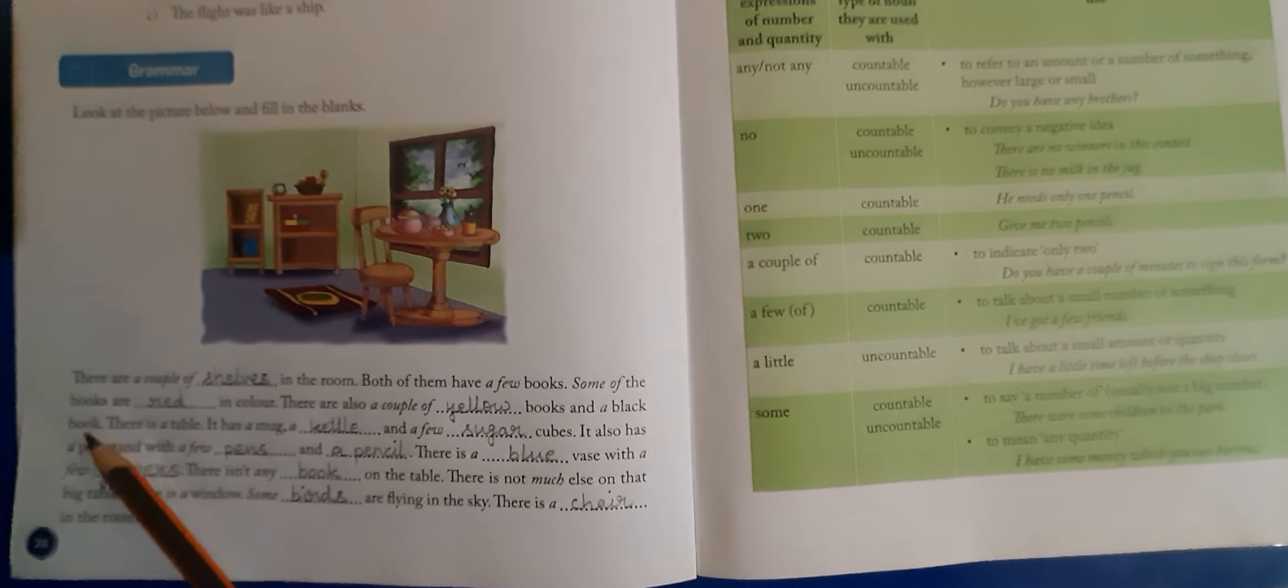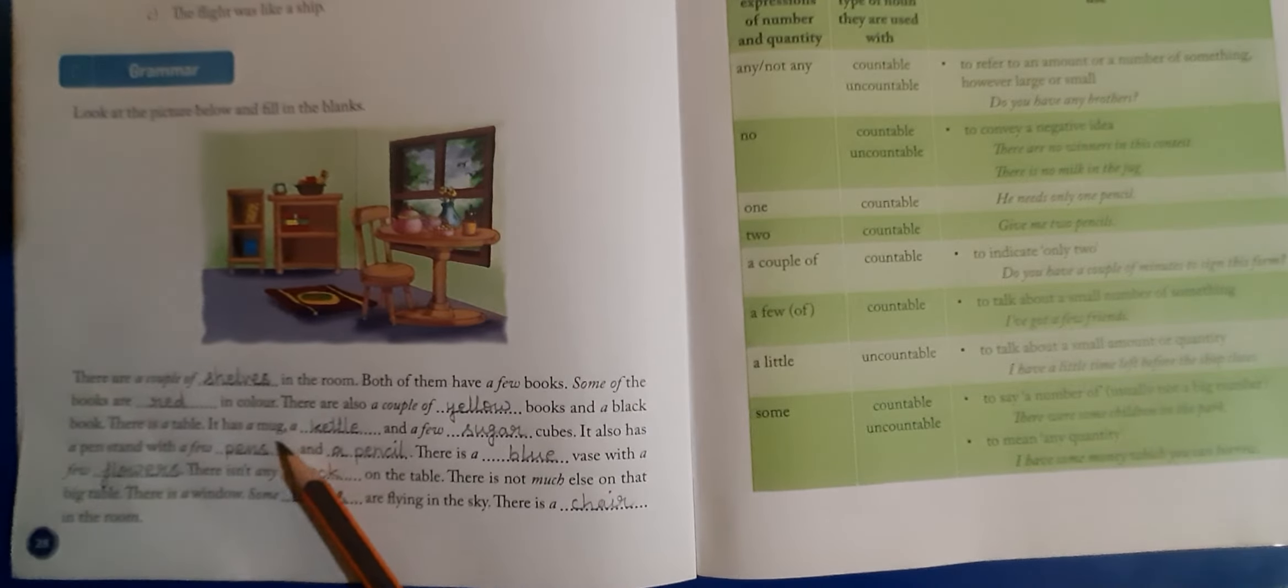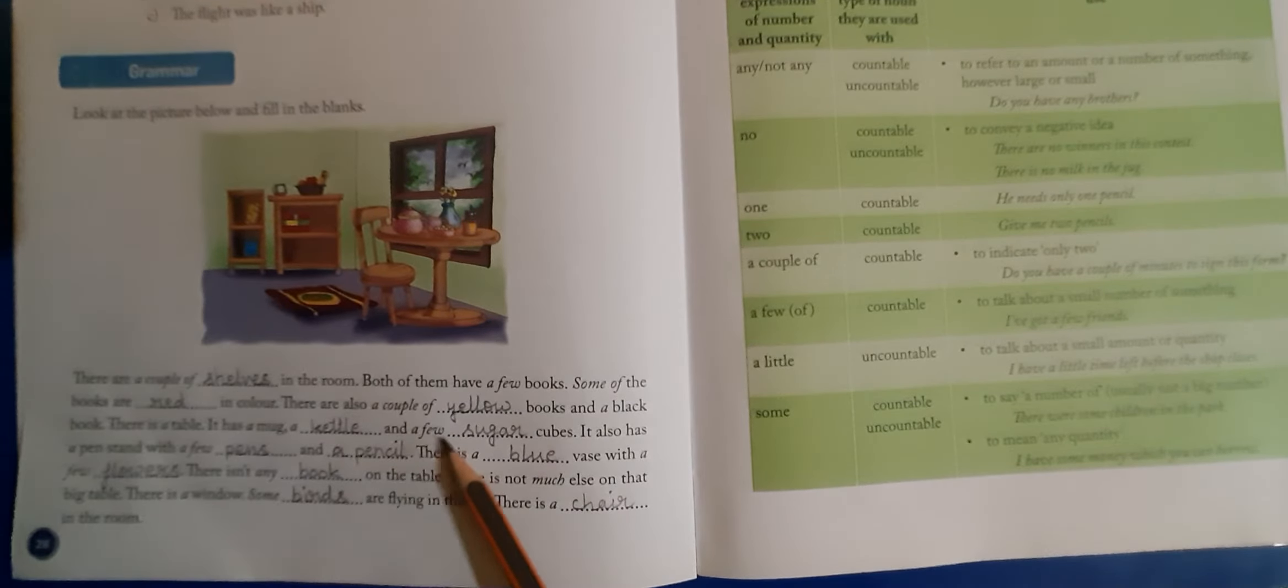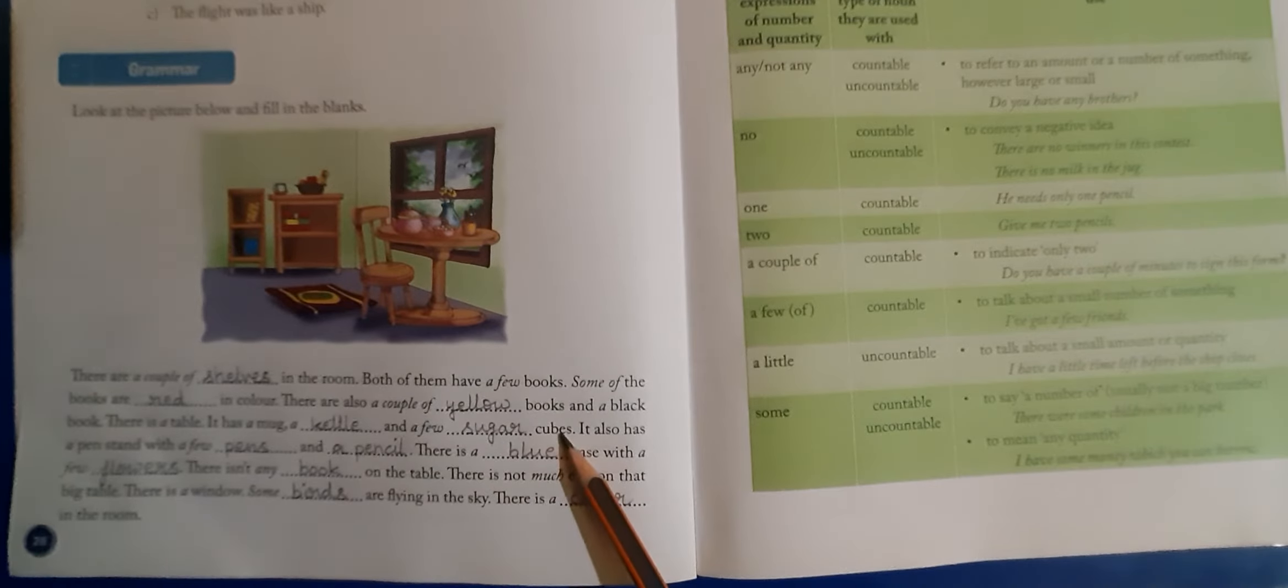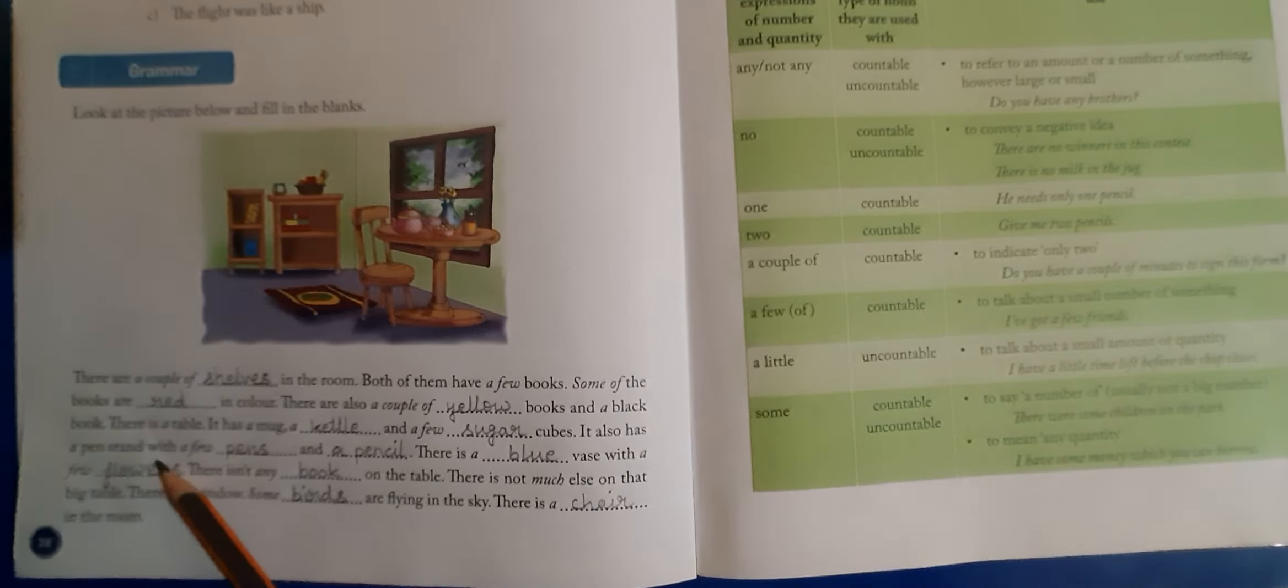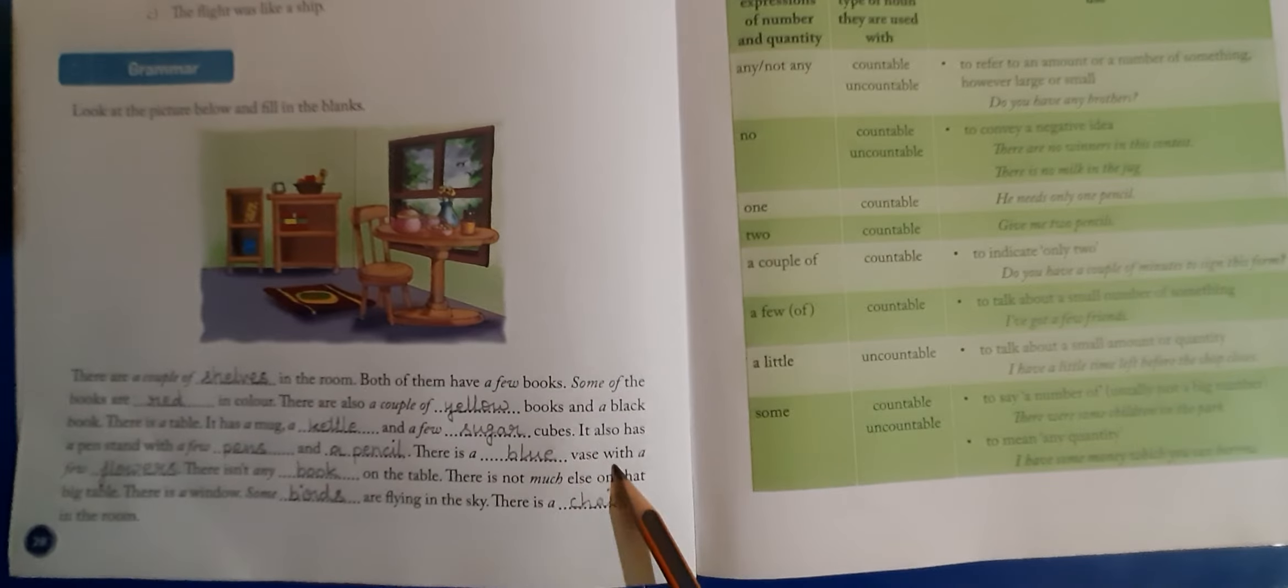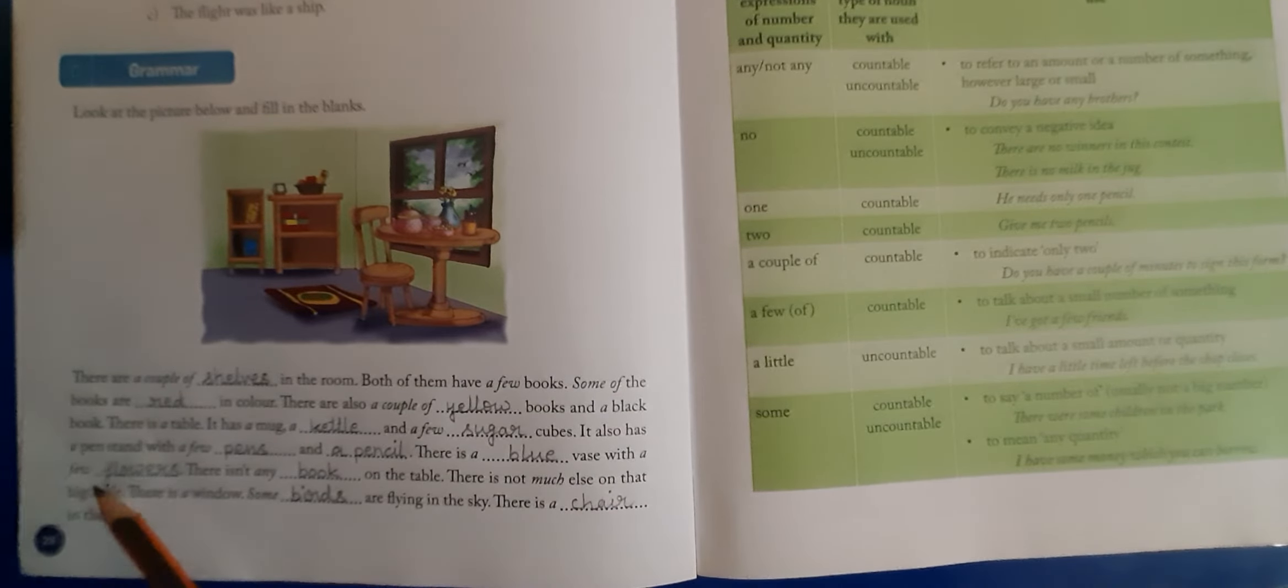And a black book. There is a table. It has a mug, a kettle, and a few sugar cubes. It also has a pen stand with a few pens and a pencil. There is a blue vase with a few flowers.